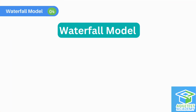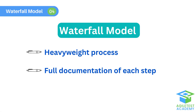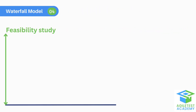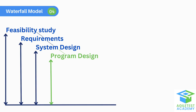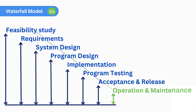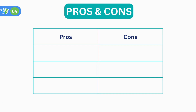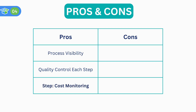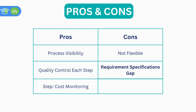Waterfall model is a heavyweight process with full documentation of each process step. In practice, each stage in the process reveals new understanding of the previous stages, so it requires an early stage to be revised. Furthermore, the development team cannot create a proposed budget and schedule without a preliminary study of the requirements and tentative design. In reality, the waterfall model has many problems, so it is rarely used in practice. It provides process visibility, quality control, and cost monitoring at each step, but it is not flexible enough. Detailed design and implementation reveal gaps in requirements specification, so the requirements may be modified during the project development.